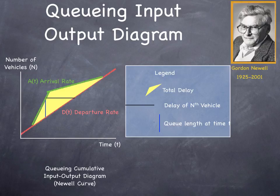How do we think about this? We can look at deterministic queuing with an input and output diagram. This is sometimes called a Newell curve, named after Gordon Newell, who is perhaps the first person to use this widely.